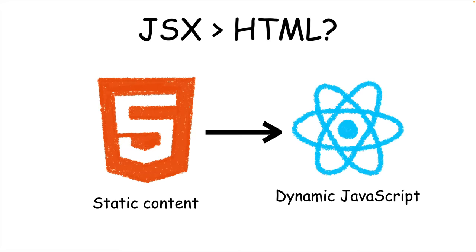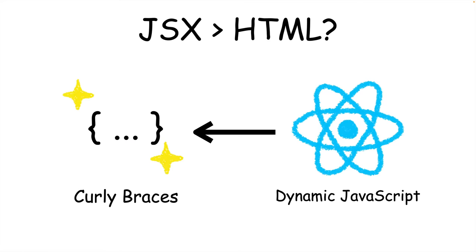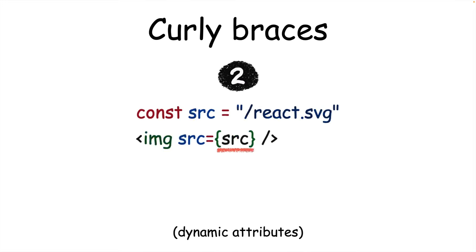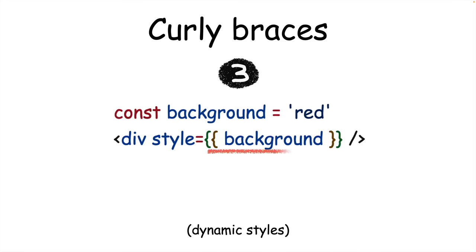If you have data, you can display it in your JSX using curly braces. Curly braces accept values like strings and numbers directly, you can use them to make your attributes dynamic, and you can style React elements using a JavaScript object within the curly braces.